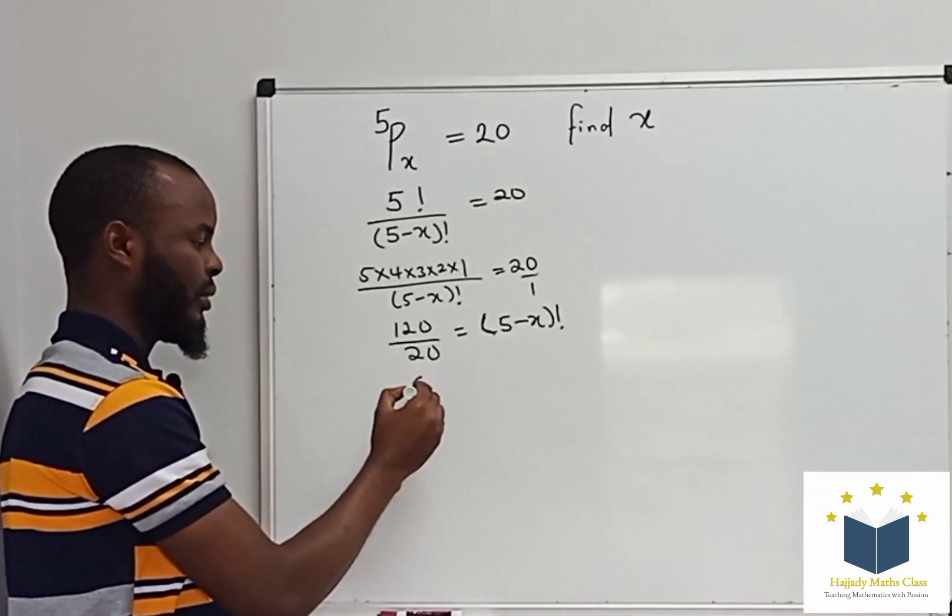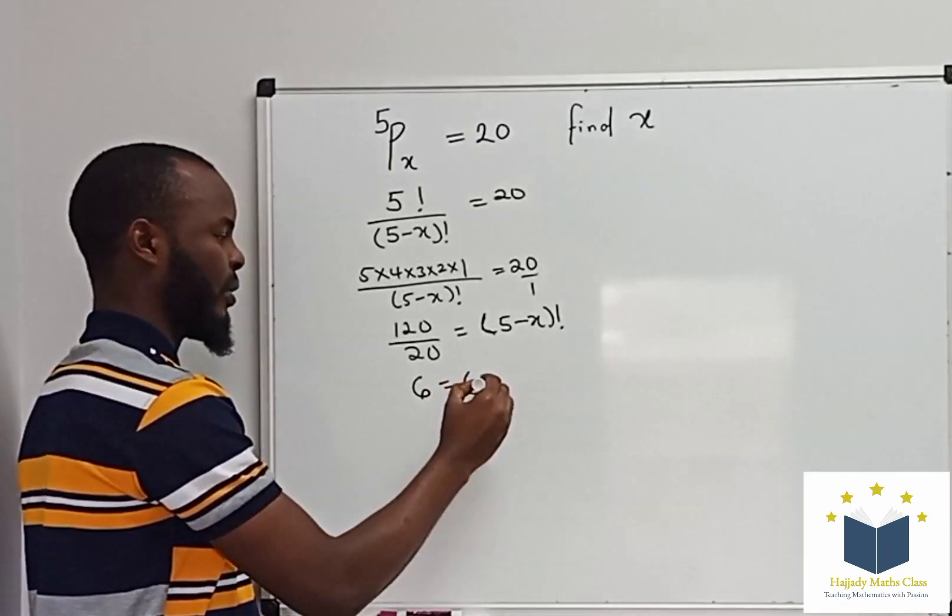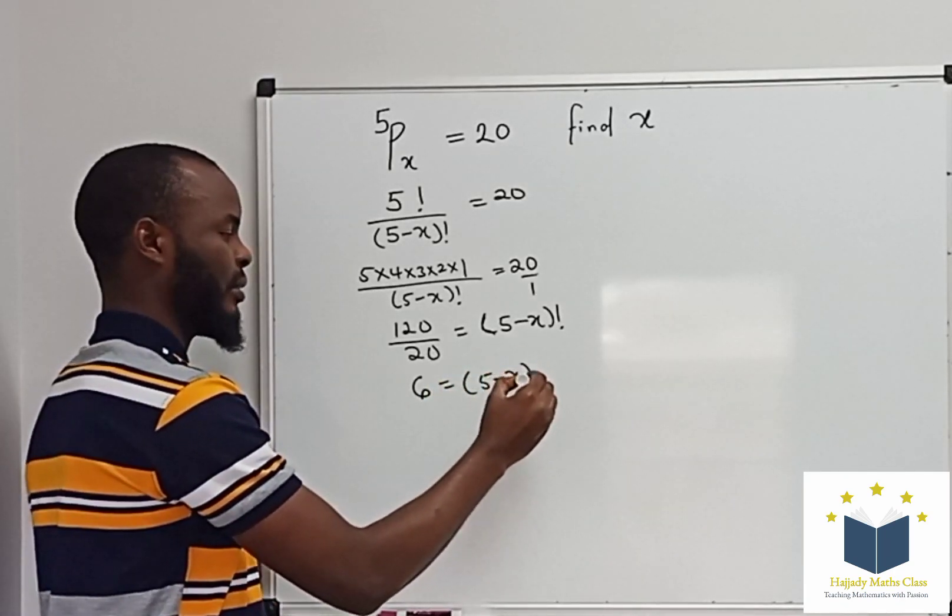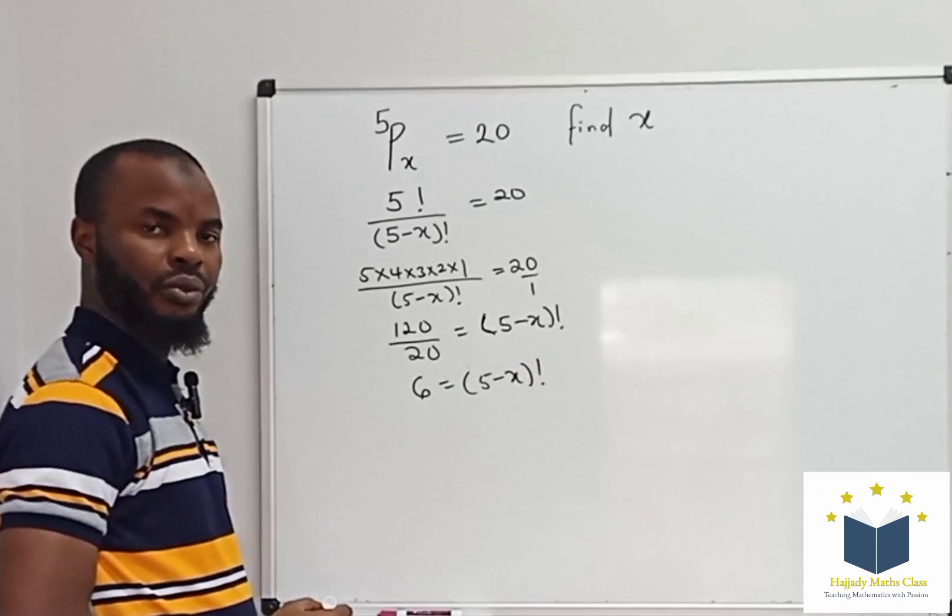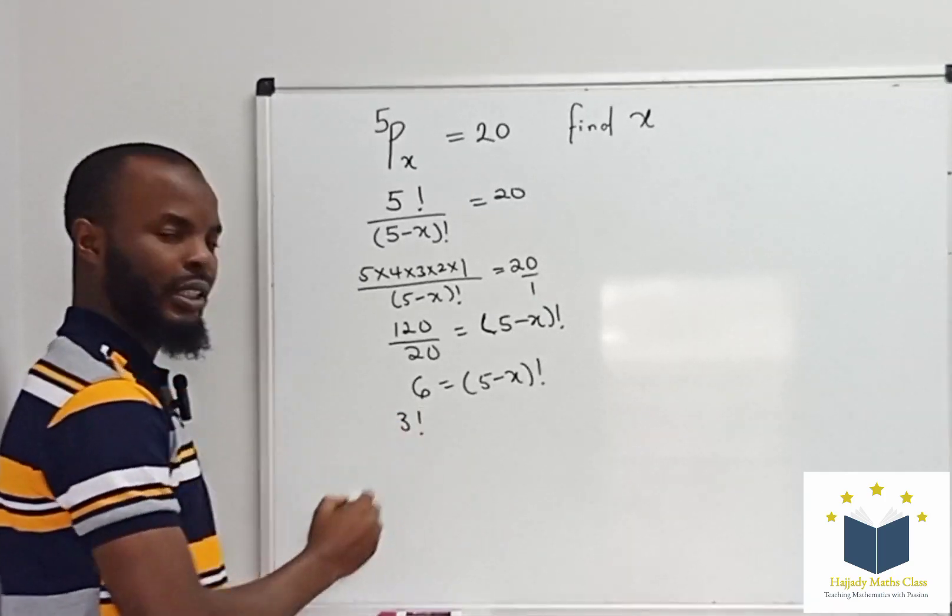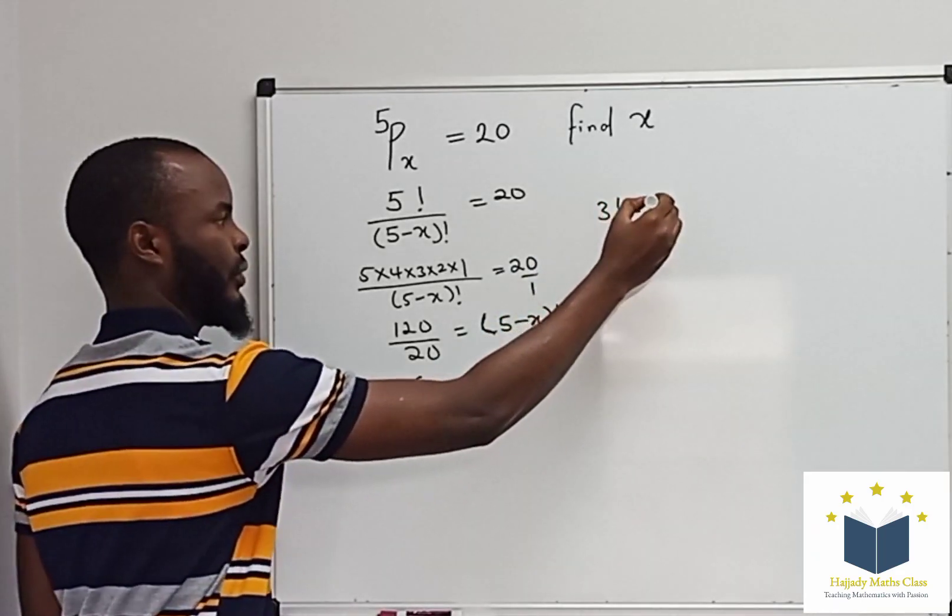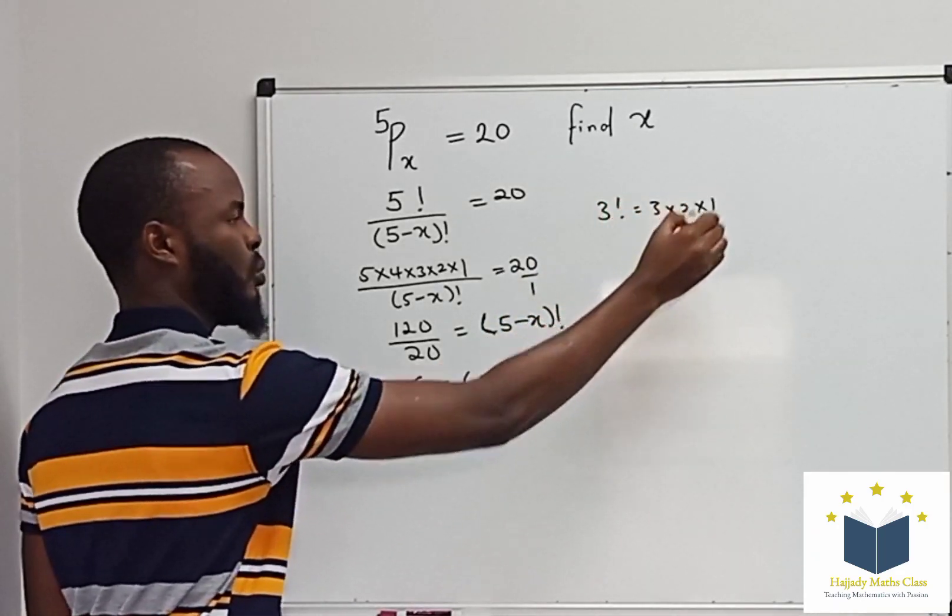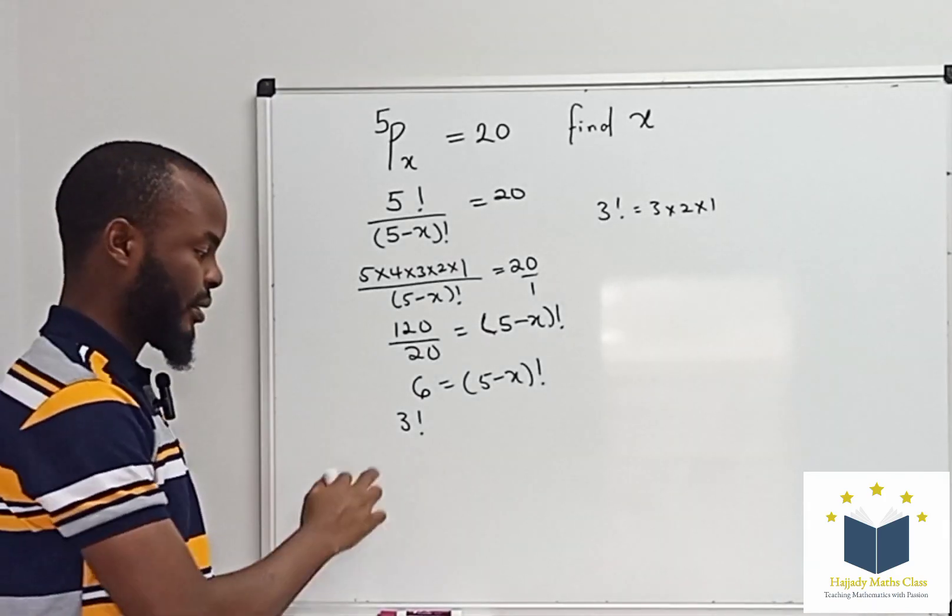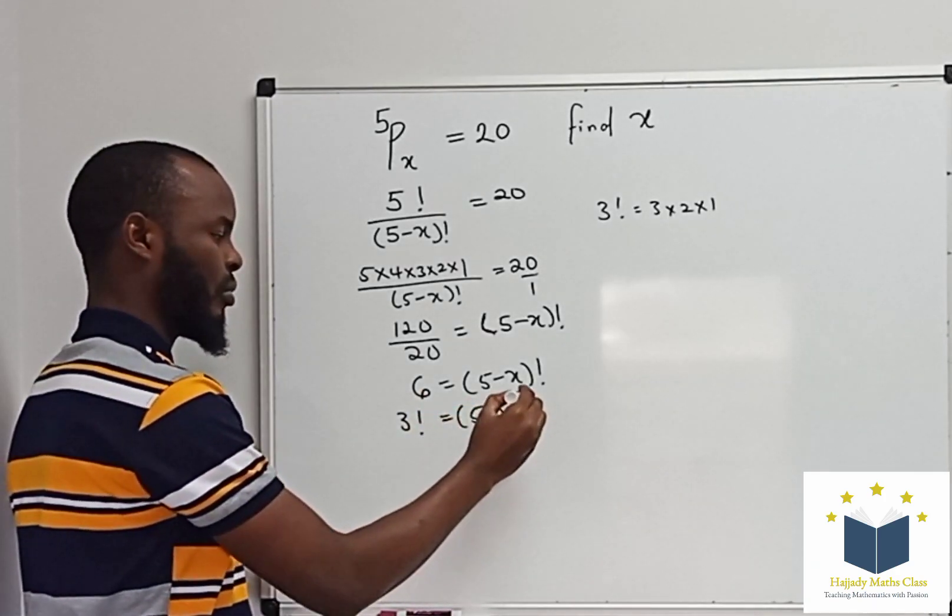Now, 120 over 20 gives 6 equals 5 minus x factorial. Don't forget that 6 is the same thing as 3 factorial, because 3 factorial is 3 times 2 times 1, which is the same thing as 6, equals 5 minus x factorial.